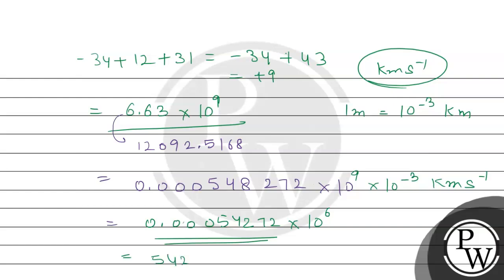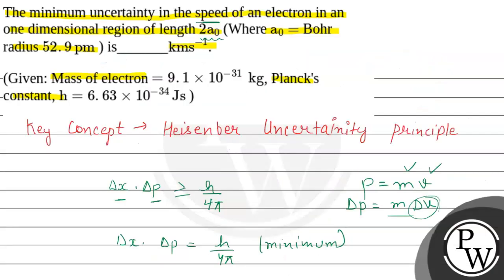The result is 548.0273, approximately 548 kilometers per second. This is our final answer based on the Heisenberg Uncertainty Principle. Hope you understood it well — best of luck!